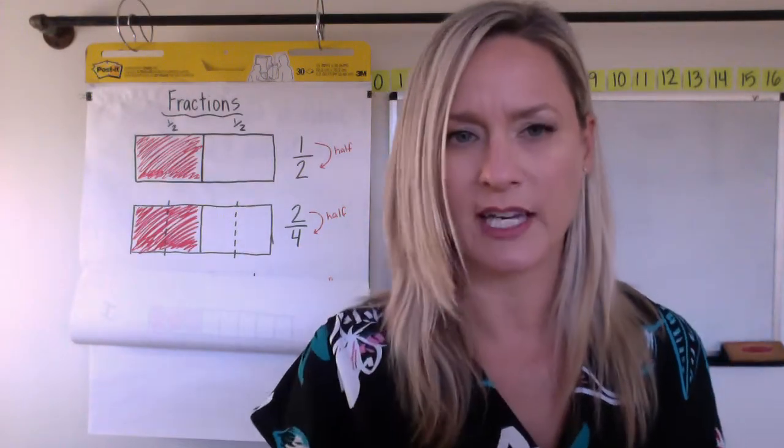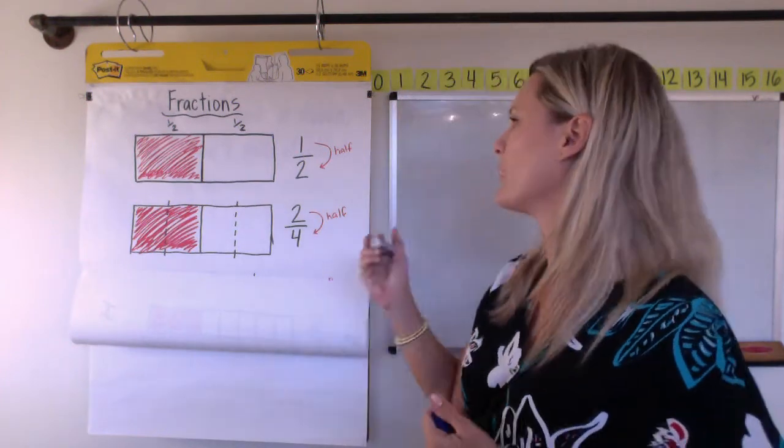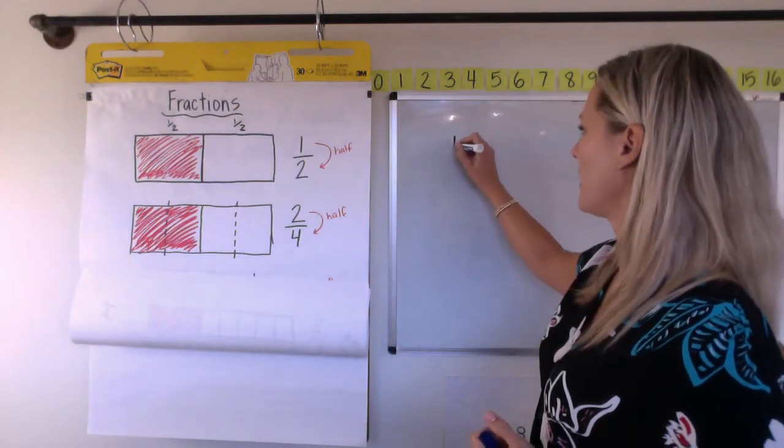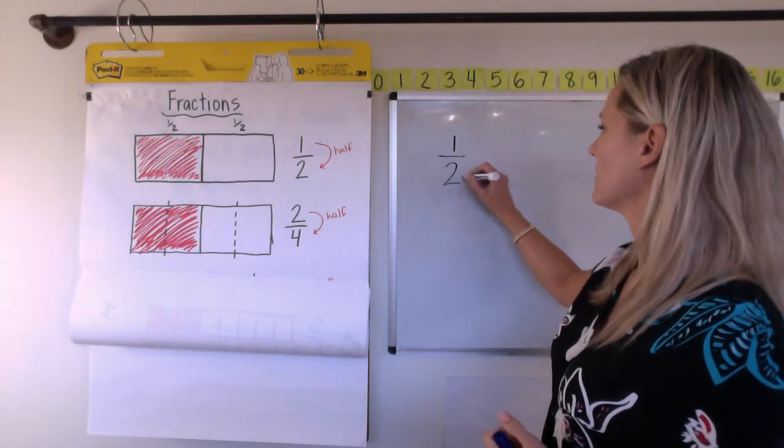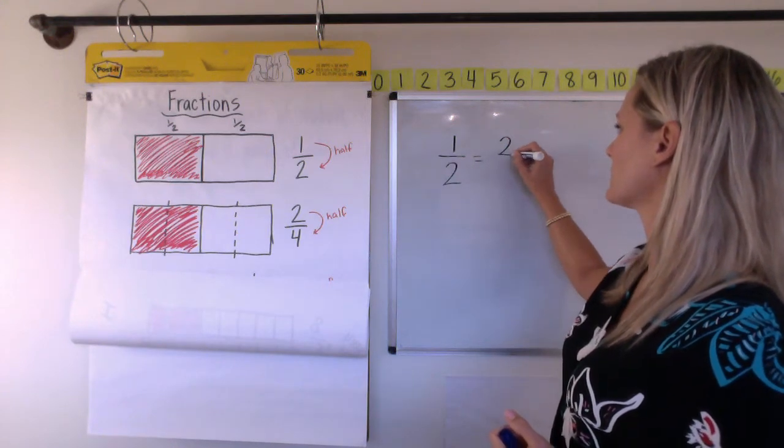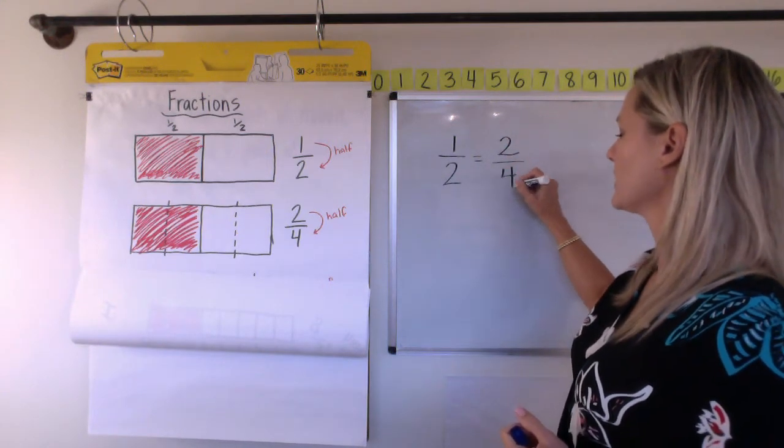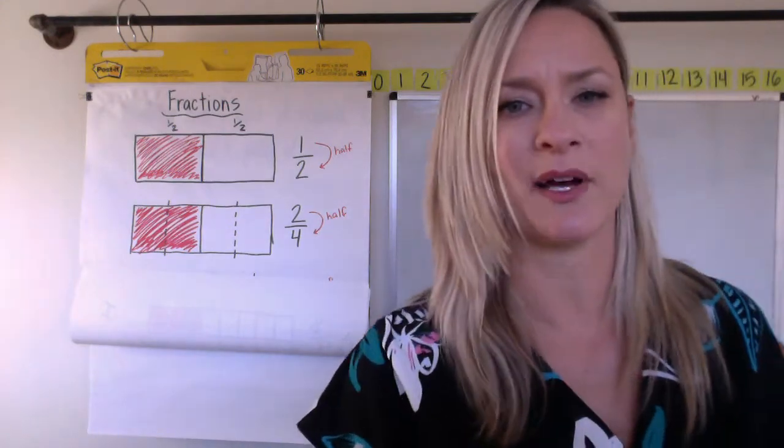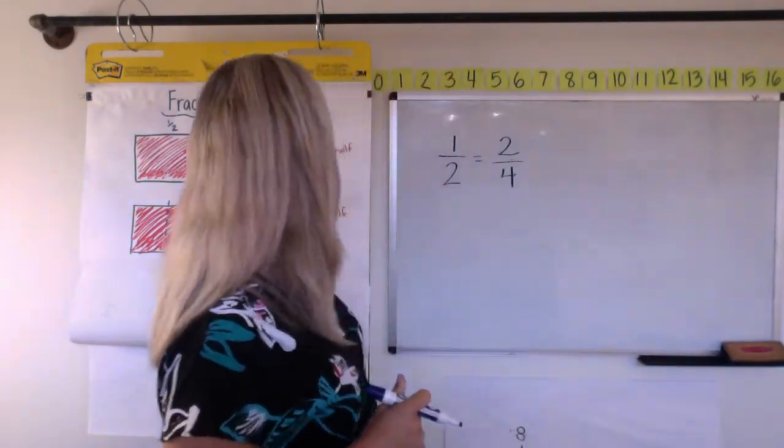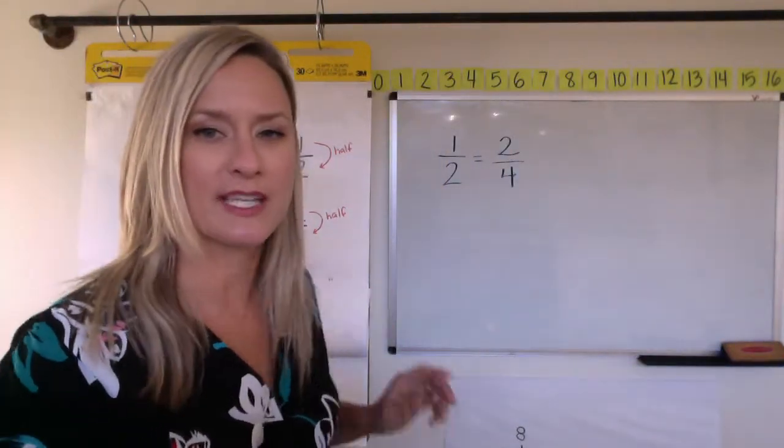I wanted to extend your thinking a little bit further today. So we figured out already that one half is equal to two fourths. And do you remember we kind of talked about that pattern that one is half of two and two is half of four.